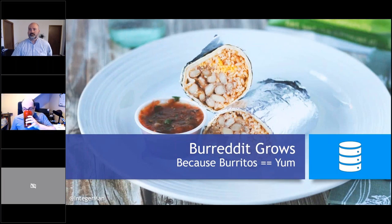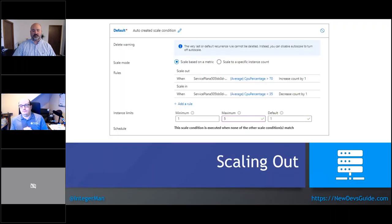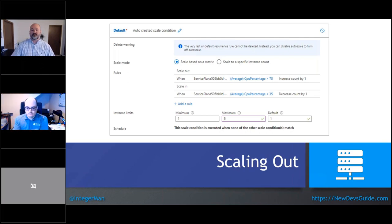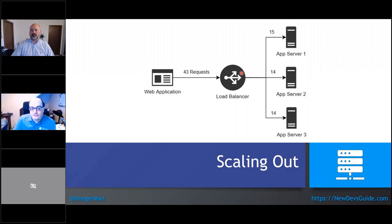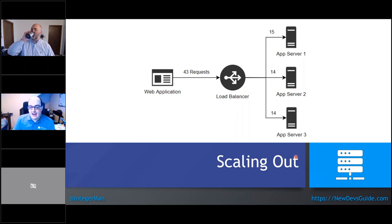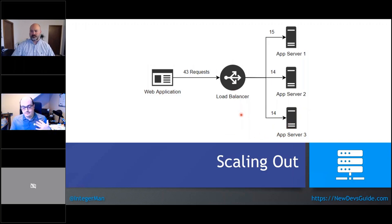A question from the audience: with auto-scaling, is there downtime when servers change? With horizontal scalability there is no downtime — the load balancer knows when a server is going offline and stops routing requests to it before it actually goes offline. When adding a new server, it lets it start up and get ready before adding it to the load balancer. Downtime only occurs with vertical scalability.